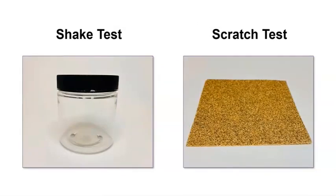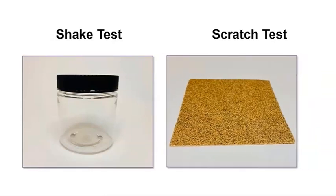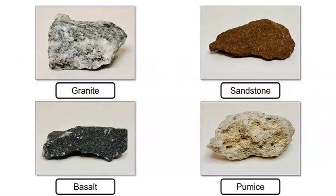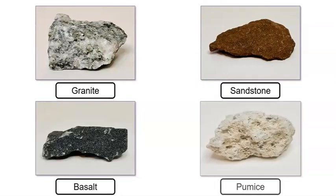We will investigate rocks by carrying out two tests: a shake test and a scratch test. To perform the shake test, we will place each rock in a jar, shake the jar, and observe what happens to the rock. To perform the scratch test, we will scratch each rock against sandpaper and observe what happens. We will perform both tests on four rocks: granite, sandstone, basalt, and pumice.